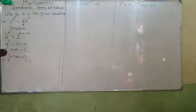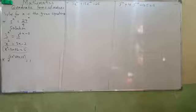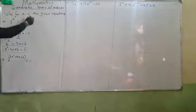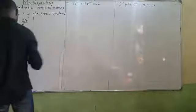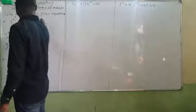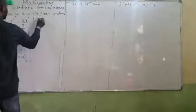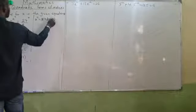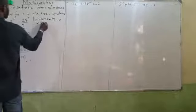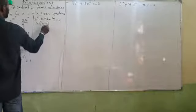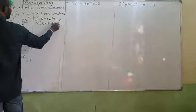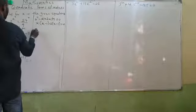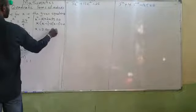We can solve this in quadratic form — what can we multiply to get 2, and the same numbers will add to get minus 3. I have minus x minus 2x plus 2 equals to 0, which gives x(x minus 1) minus 2(x minus 1) equals to 0. So x equals to 2 or x equals to 1.